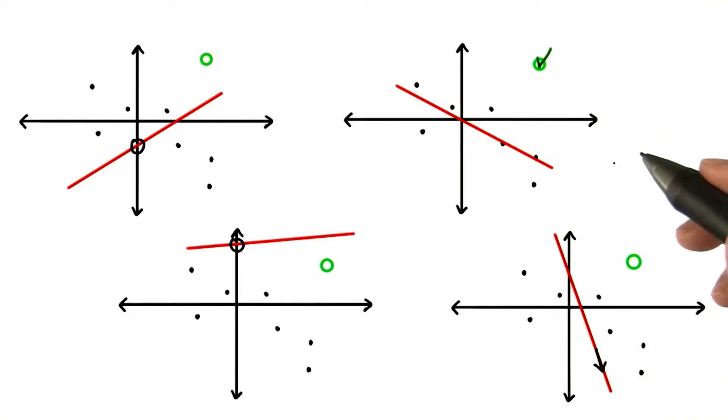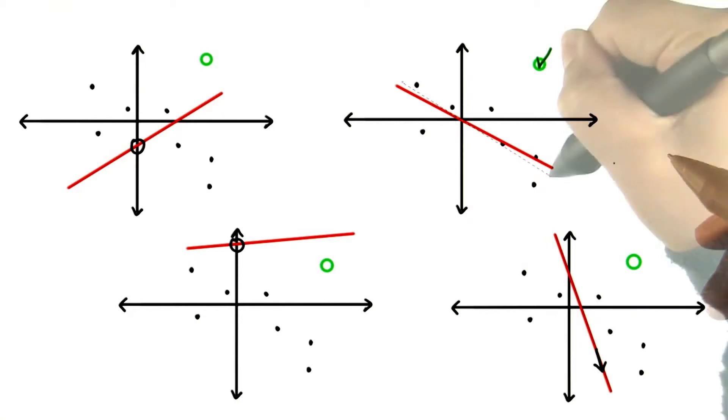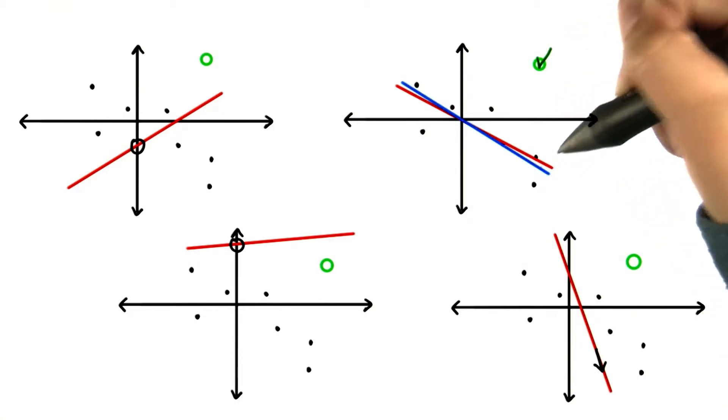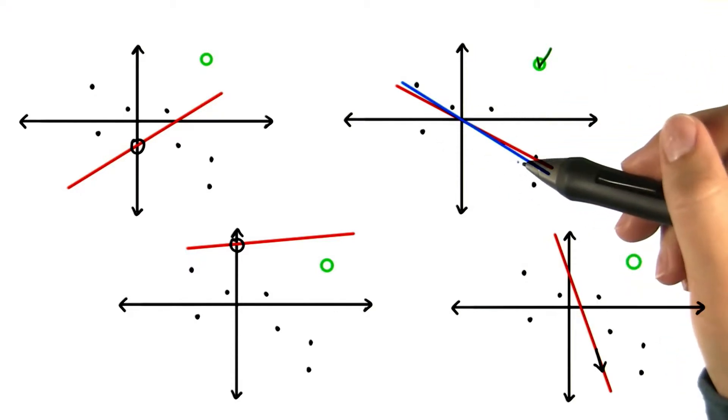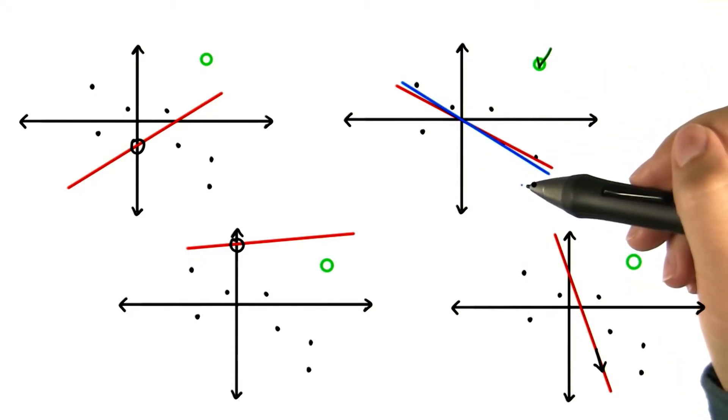We can see which one is better, but how do we determine mathematically which is the best? For example, how do we know that this line in blue isn't slightly better? There are a lot of lines that could look like they best approximate the data.